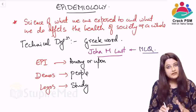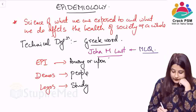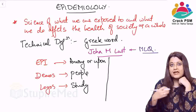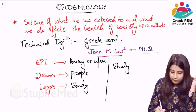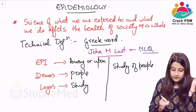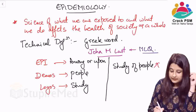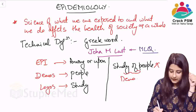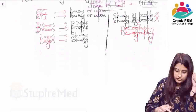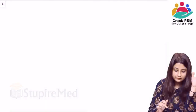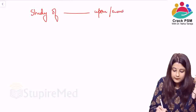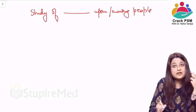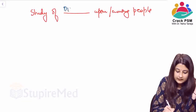So if I try to combine these words — is epidemiology simply the study of people? No, it is not. The study of people is called demography. So what is the definition of epidemiology? It is the study of something upon or among people — and that something is nothing but diseases. Epidemiology is the study of diseases upon people or among people.